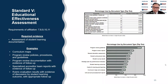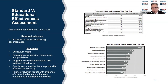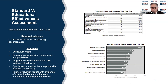Standard 5 is our Educational Effectiveness Assessment Standard. The accreditation readiness report presents the requirements of affiliation and required evidence. Common examples institutions have provided include curriculum maps aligning required courses with requisite learning outcomes, program review policies and documentation, specialized accreditor team reports with evidence of follow-up of findings, and rubric evaluation results. These are all very commonly used, though again not required.